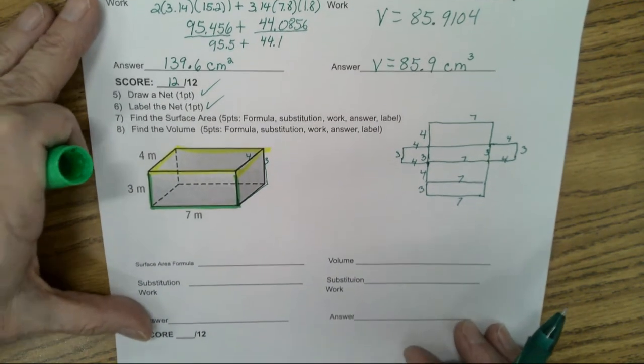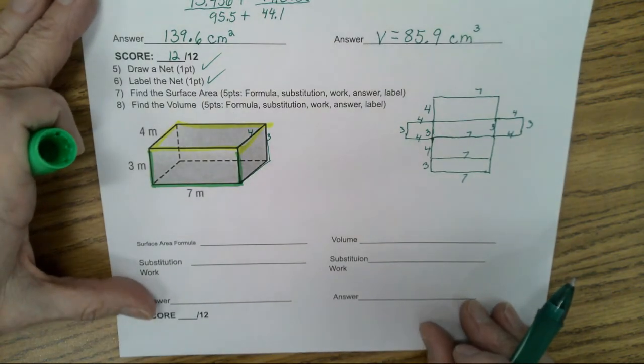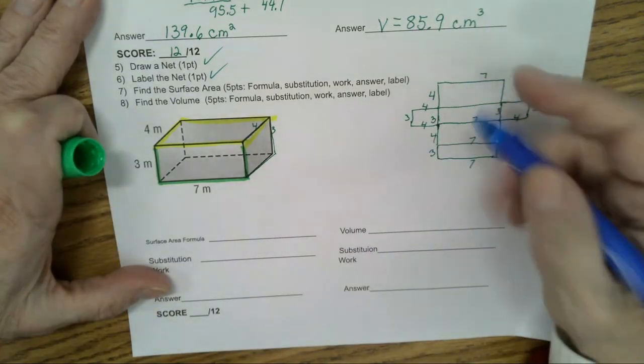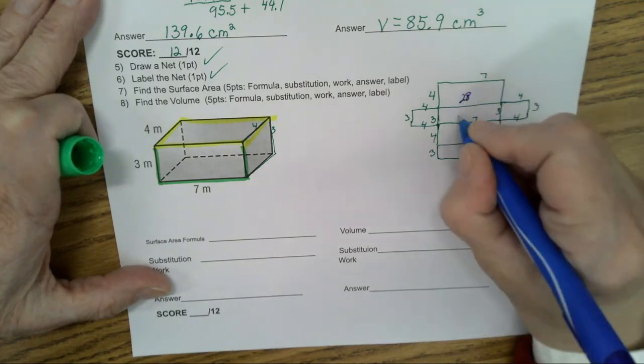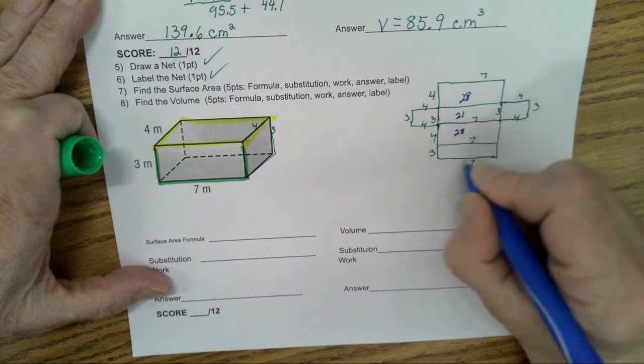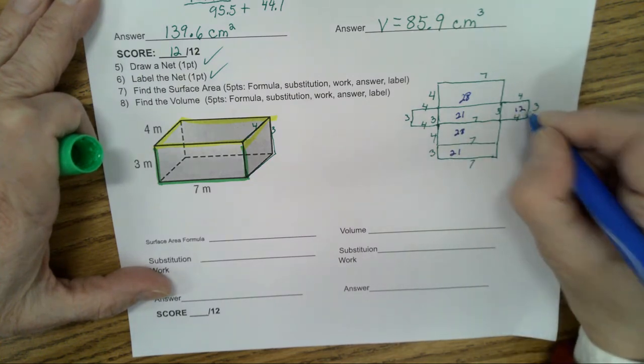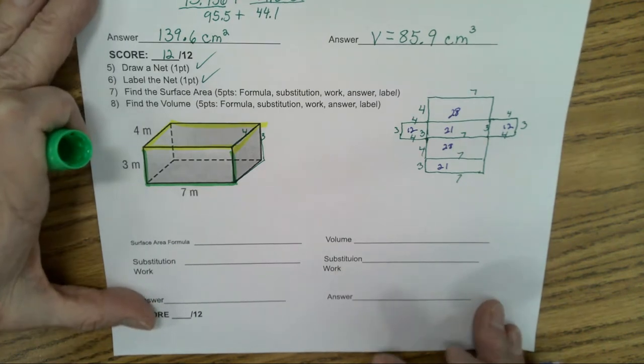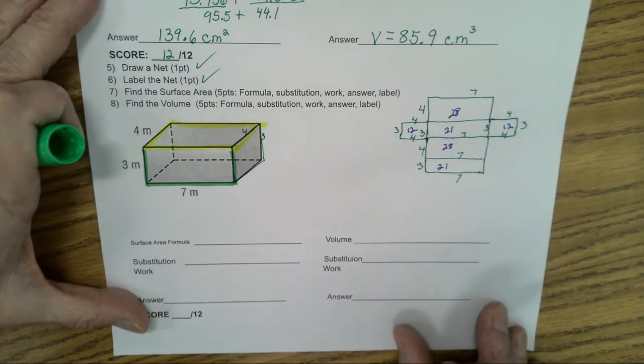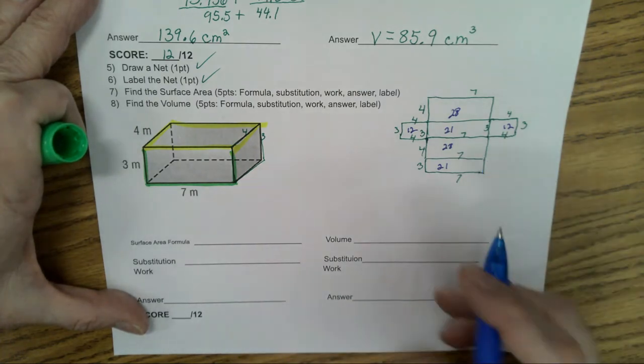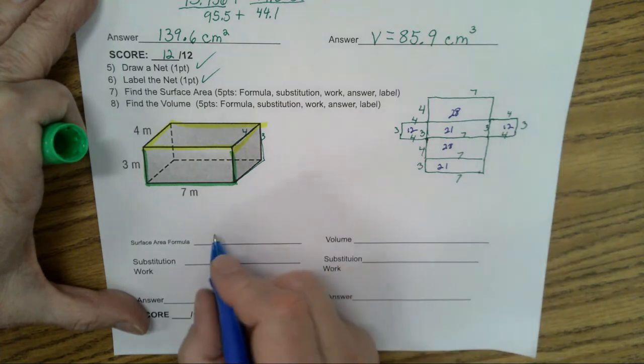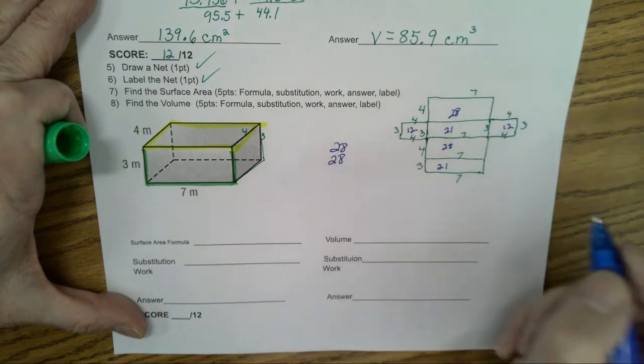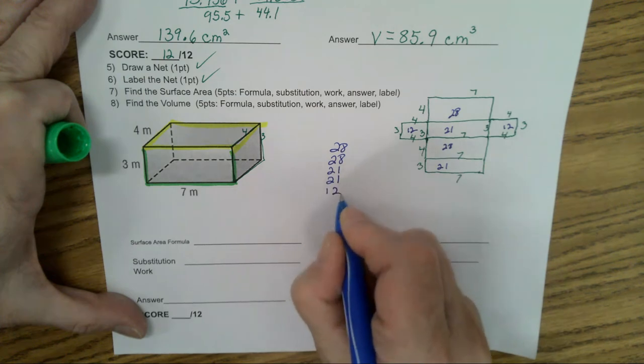Now, we're going to go to finding the surface area. Surface area means you find the area of each shape and then add them together. So we'd have here 28. Four times seven is 28. Three times seven is 21. Four times seven is 28. Three times seven is 21. Four times three is 12. And you add them all together. That's what they expect you to do on the sixth grade standard.